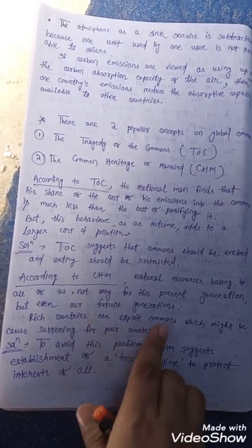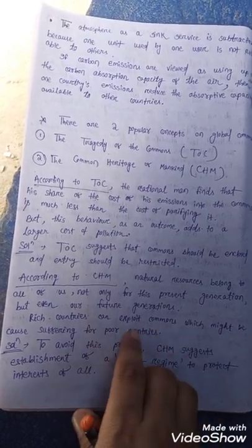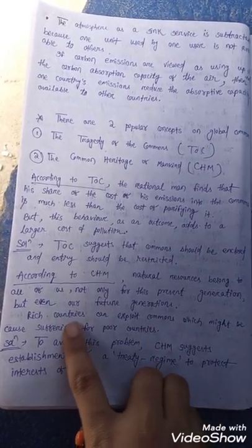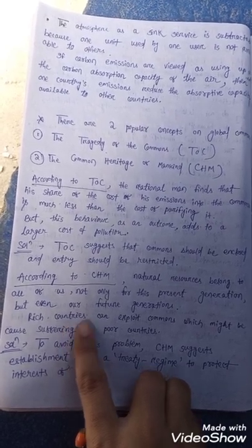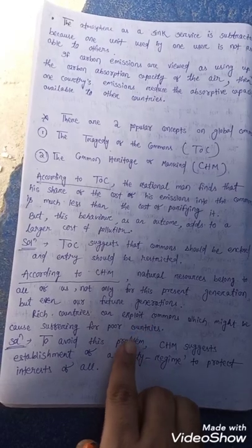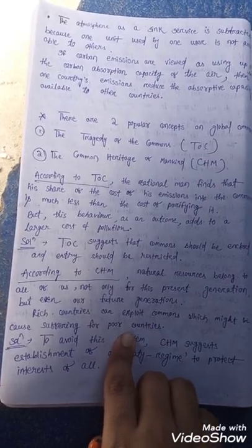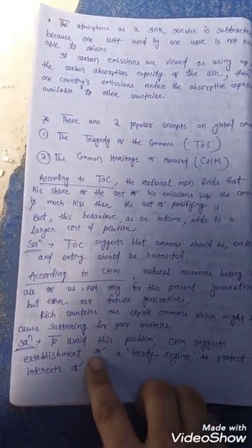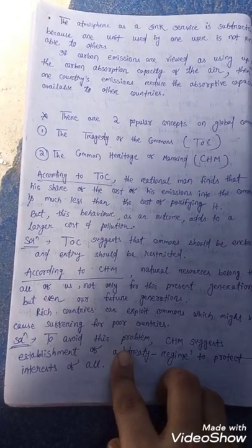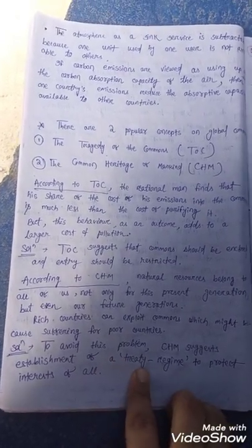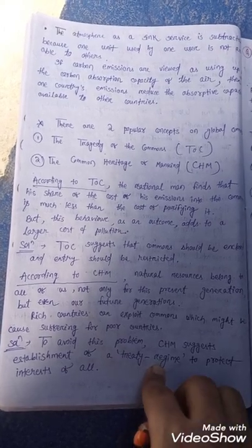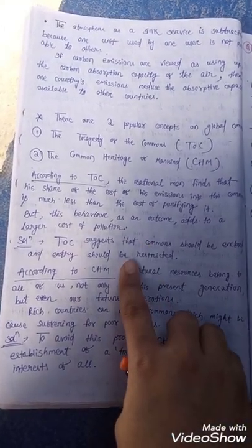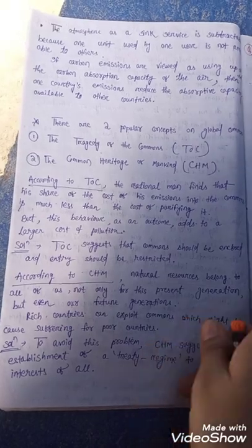Exploitation of the commons might cause suffering for poor countries. To avoid this problem, CHM suggests the establishment of a treaty regime to protect the interest of all countries, ensuring that future generations also have no problem accessing these resources.